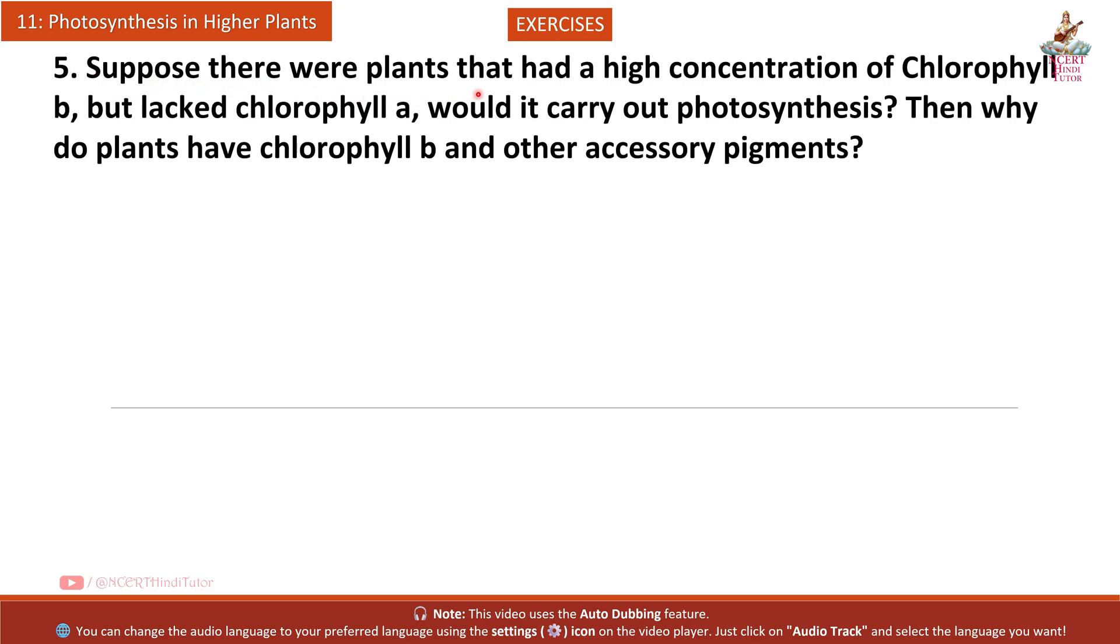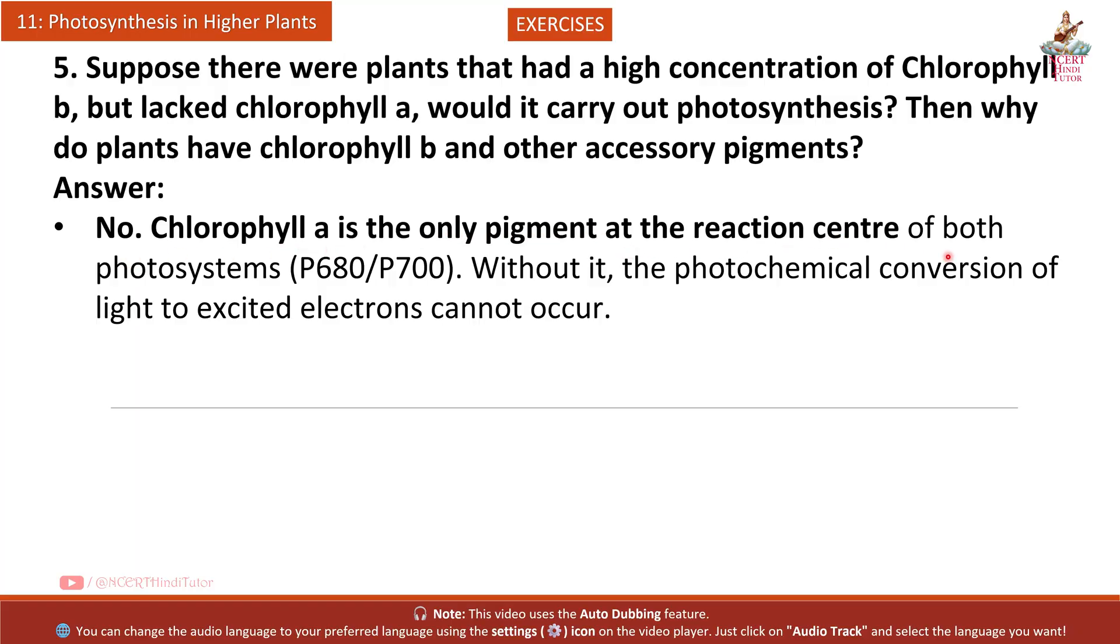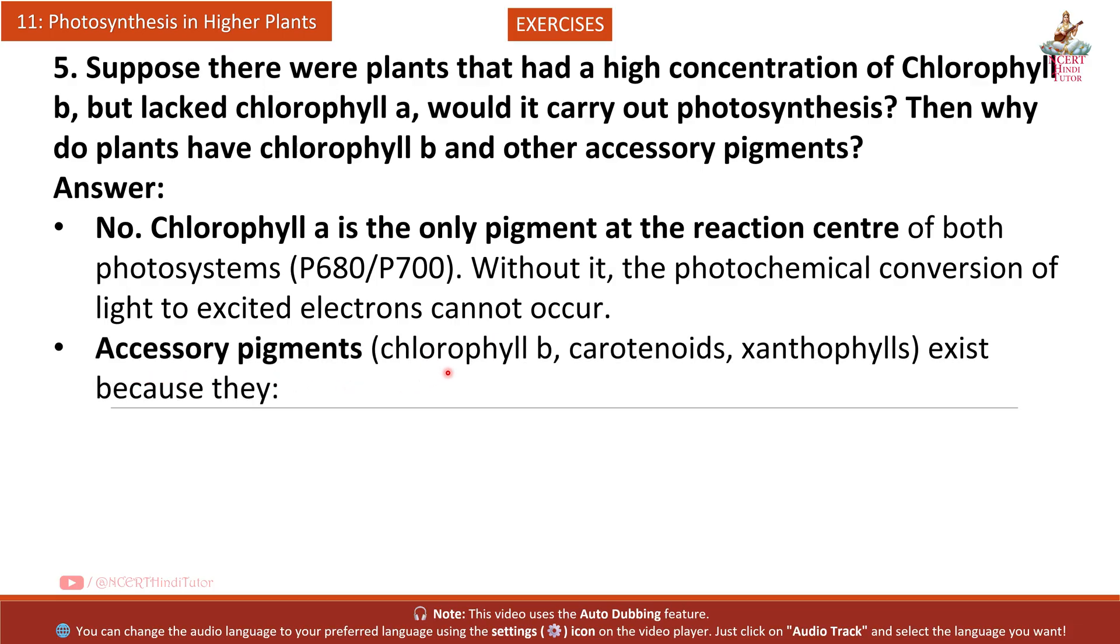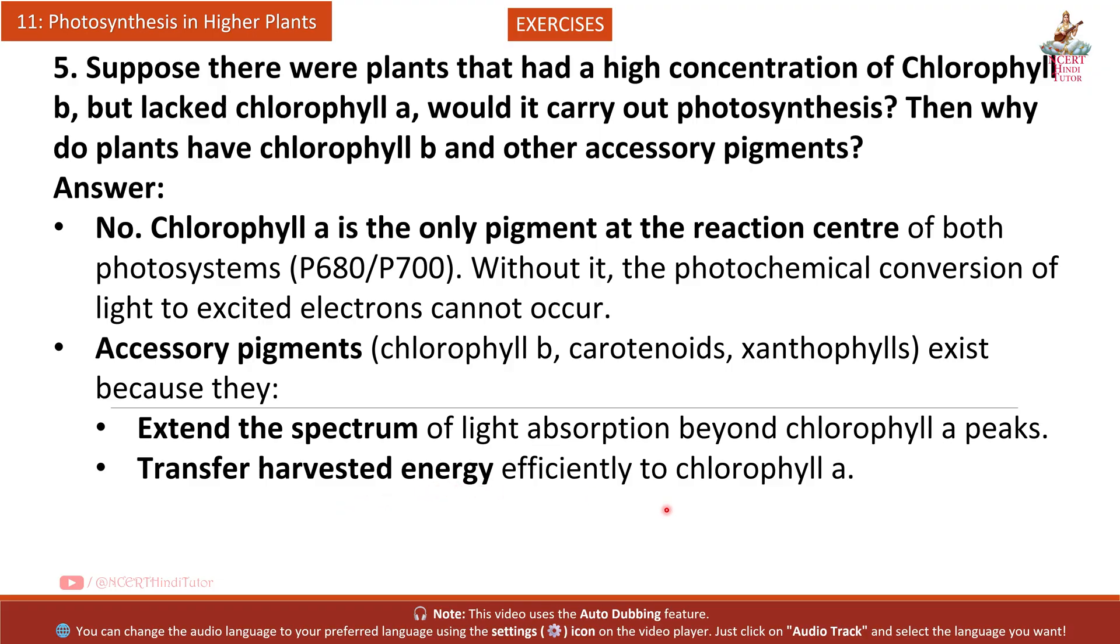Answer: Elevated CO2 to O2 ratio in bundle sheath cells drives competitive binding towards CO2. C4 metabolism delivers CO2 directly to Rubisco's active site, saturating it and suppressing O2 binding. Consequently, carboxylation far outpaces oxygenation, minimizing photorespiration. Question 5: Suppose there were plants that had a high concentration of chlorophyll B but lacked chlorophyll A. Would it carry out photosynthesis? Why do plants have chlorophyll B and other accessory pigments?